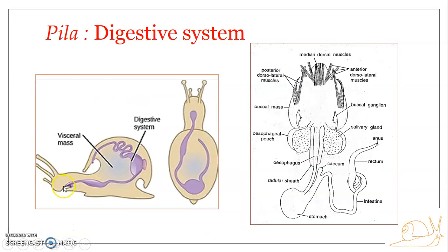Looking into each structure in detail: this is the buccal mass, forming the foregut region. This portion is the foregut, and this one forms the midgut region — the stomach as well as the intestine. The rectum forms the last part, that is the hindgut.